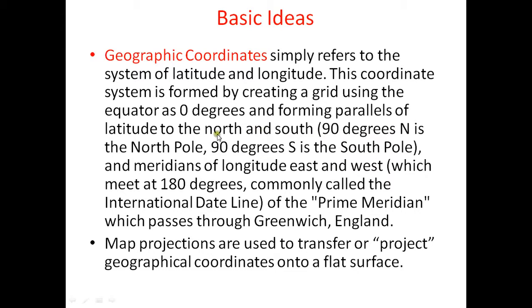The equator is used as 0 degrees. Going north up to 90 degrees gives us the North Pole, and going south gives us the 90-degree South Pole. Lines parallel to the equator are called latitudes. 90 degrees north is the North Pole and 90 degrees south is the South Pole.